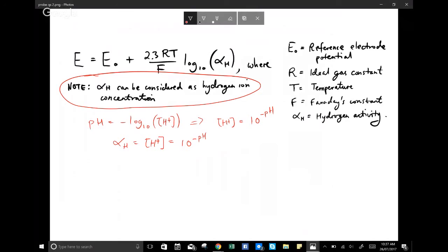So if we sub this back into our equations, we have this. And we've got all this stuff. T, F, log 10, 10 to the negative pH.